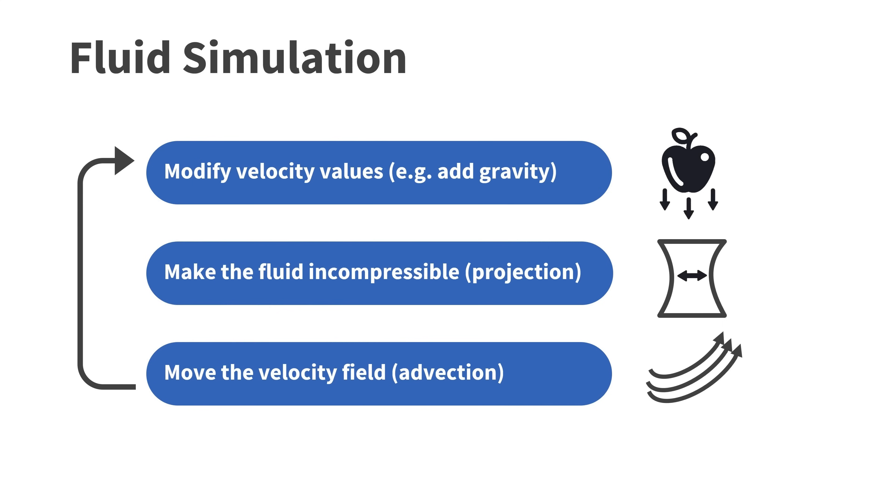Here we see an overview of the complete simulation algorithm. There are three steps. In the first step we modify the velocity values based on external forces. We will only use gravity. In the second step we make the fluid incompressible. This step is called projection. In the third step we move the velocity field in the grid. This step is called advection.